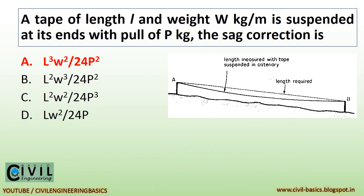A tape of length l and weight w kg per meter is suspended at its ends with a pull of p kg. The sag correction is l cubed times w squared divided by 24 times p squared.